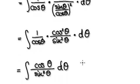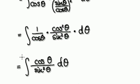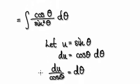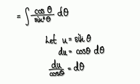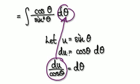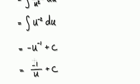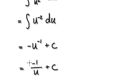Now let u equal sin(θ), so du equals cos(θ) dθ. Substituting u and du into the integral, the cos(θ) terms cancel, leaving the integral of 1/u² du, which is u to the power of negative 2. Integrating that gives negative u to the power of negative 1, or negative 1/u, plus a constant.